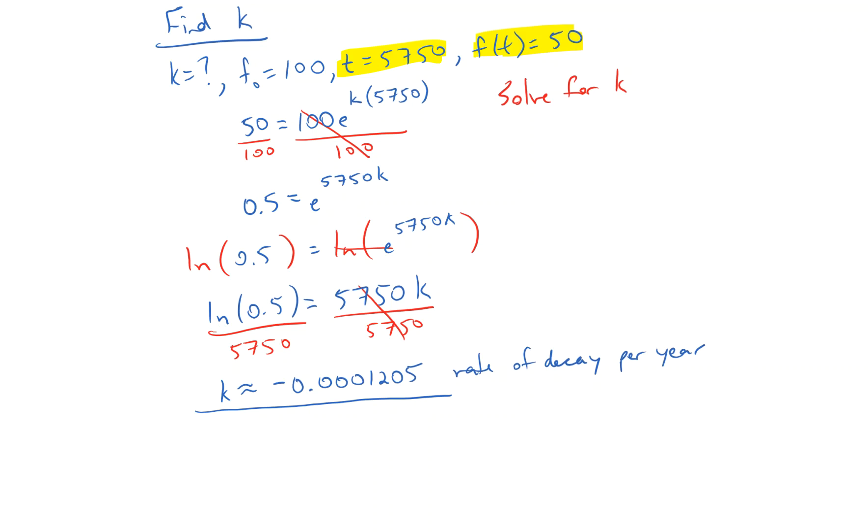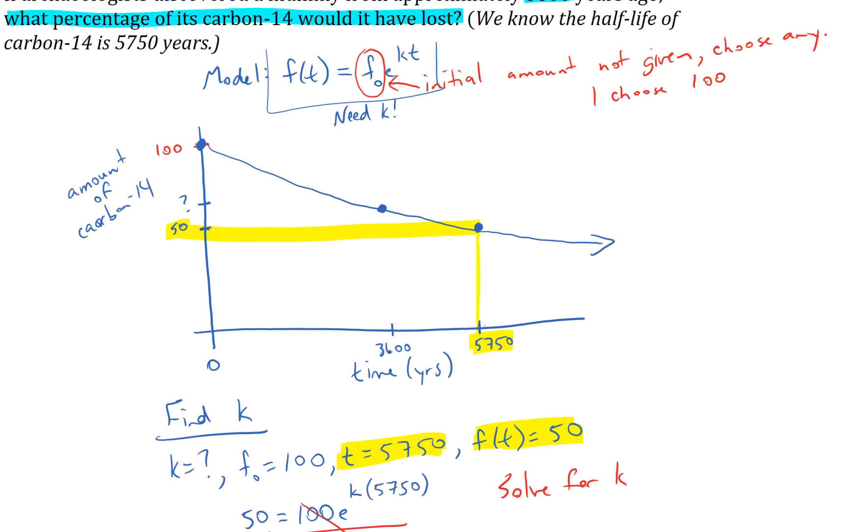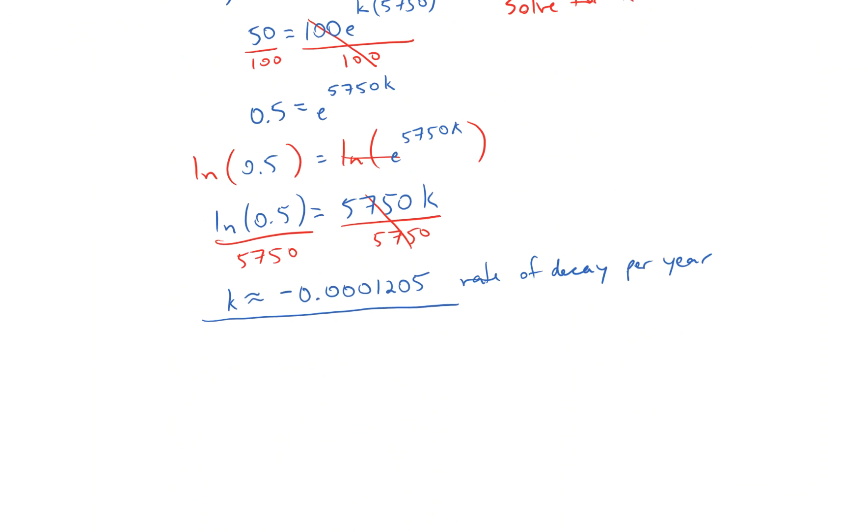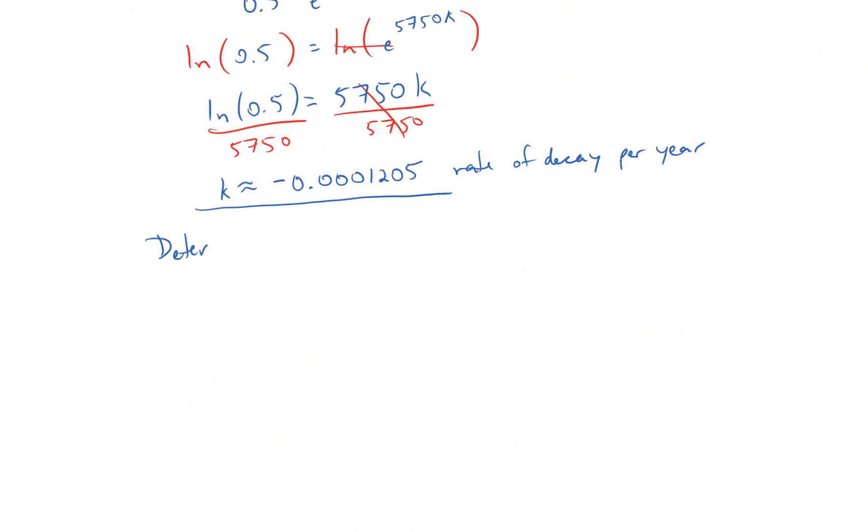Now I have my k value. Now the goal is to find f(t) whenever t is 3600. Determine f(t), which would be the amount of Carbon-14, when t equals 3600.